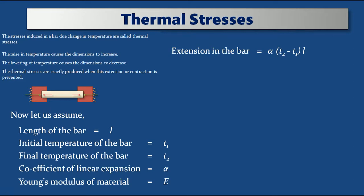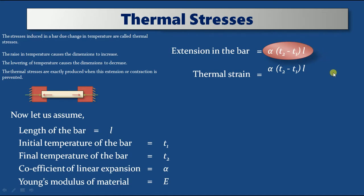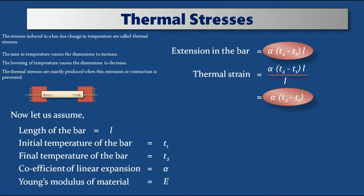With the help of this change in dimension we can find what is the strain — the thermal strain. Thermal strain is equal to change in dimension divided by original dimension. The change in dimension is alpha into (T2 minus T1) into L, divided by the original length L. We can cancel the two L terms, giving thermal strain = alpha into (T2 minus T1). Remember this formula for finding thermal strain in terms of coefficient of expansion into the difference in temperature values.